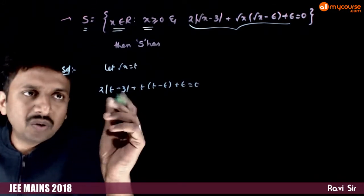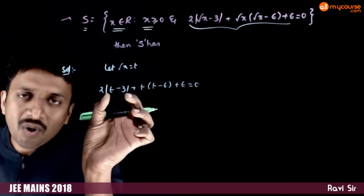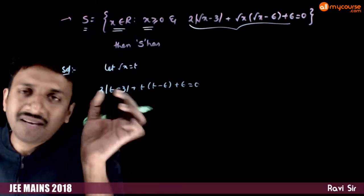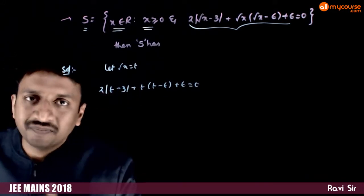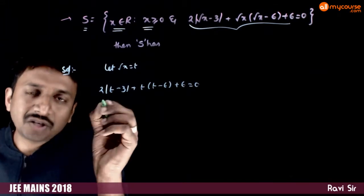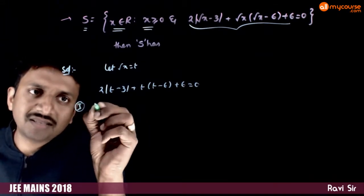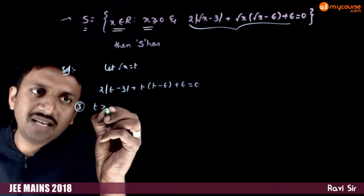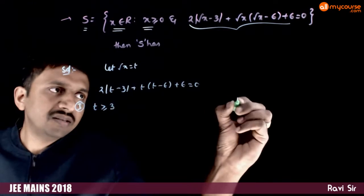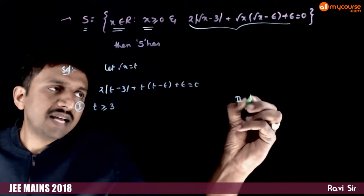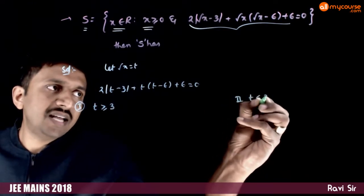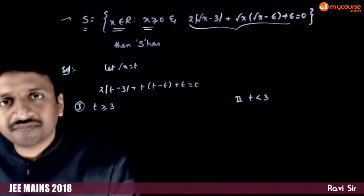We have the term |t - 3|, so let us solve it in two cases. First case: t ≥ 3. Second case: t < 3.